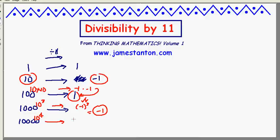10,000. That's 10 to the 4th. That's going to leave the same remainder as negative 1 to the 4th, positive 1. And so on. 100,000, 10 to the 5th, leaves the same remainder as negative 1 to the 5th, negative 1. So it looks like the powers of 10 leave remainders of 1, negative 1, 1, negative 1, 1, negative 1, and so on in an alternating fashion.